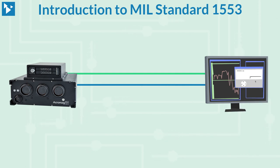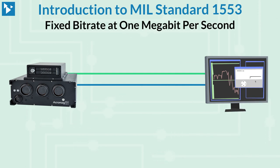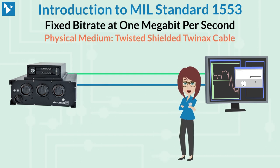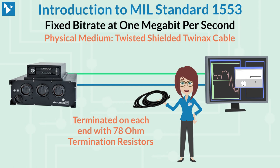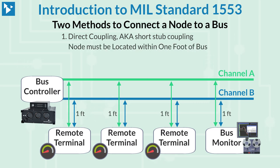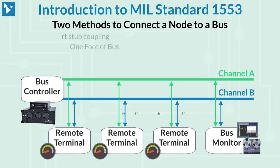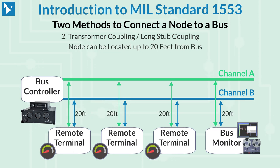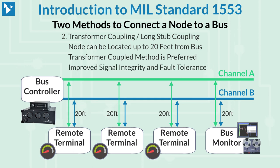The MIL-STD-1553 bus operates at a fixed bit rate of 1 megabit per second, and communication is half duplex. The physical medium is a twisted shielded cable known as TwinX, terminated on each end with 78 ohm termination resistors. There are two methods for connecting a node to a bus: direct coupling, also known as short stub coupling, which requires the node to be within one foot of the bus; and transformer coupling, or long stub coupling, where the node can be up to 20 feet away. Transformer coupling is the preferred method as it has improved signal integrity and fault tolerance.